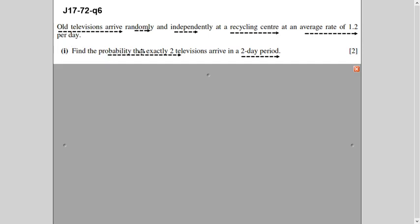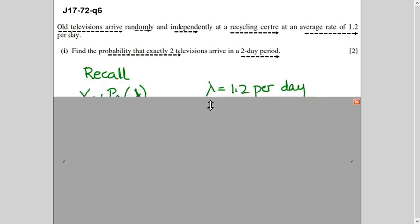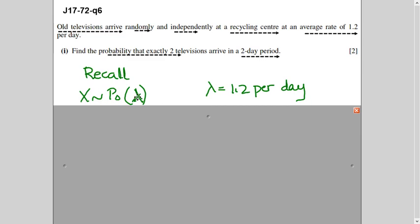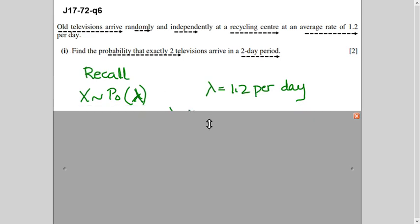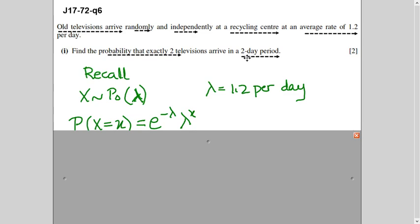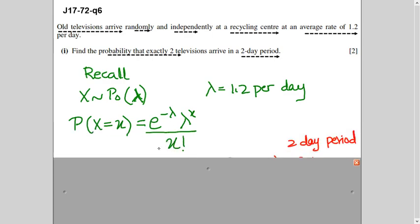You have to find the probability that exactly two televisions arrive in a two-day period. In Poisson Distribution, we change the lambda interval depending on the unit time given to us. So if per day it is 1.2, for two days we double it. X represents the random variable — in this case, old televisions — and lambda per day is 1.2. For two days, it will be 2.4.